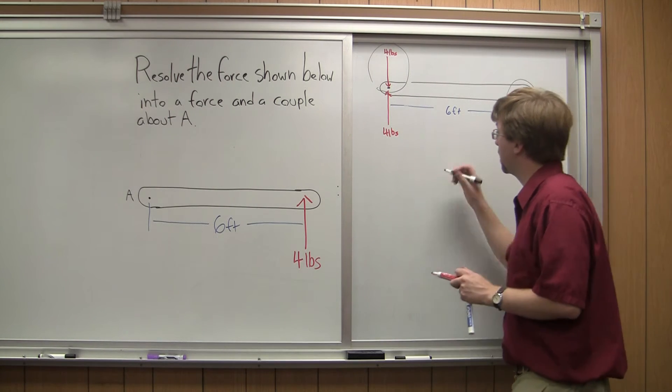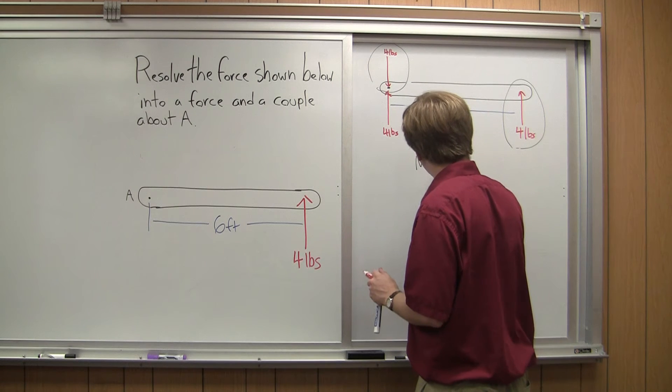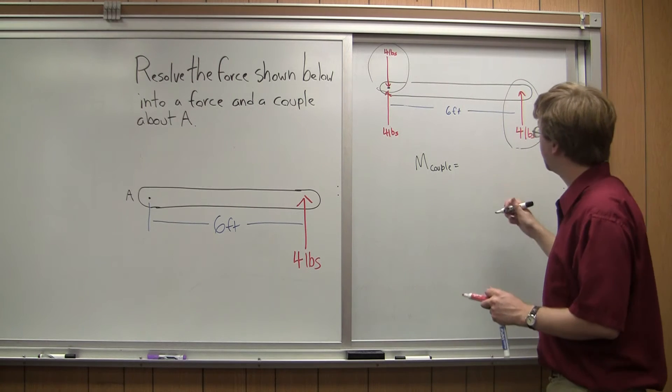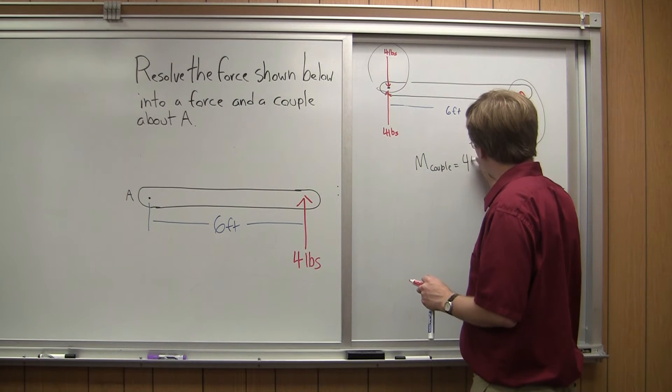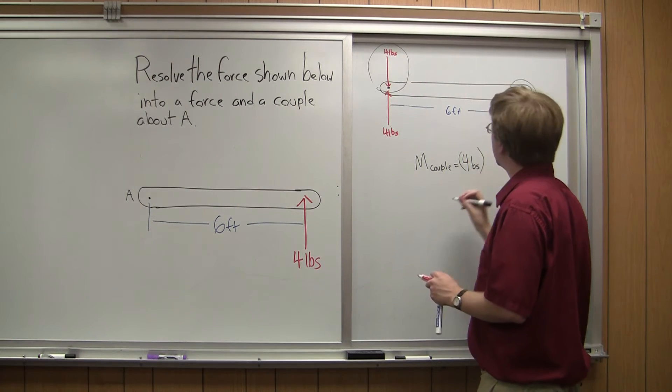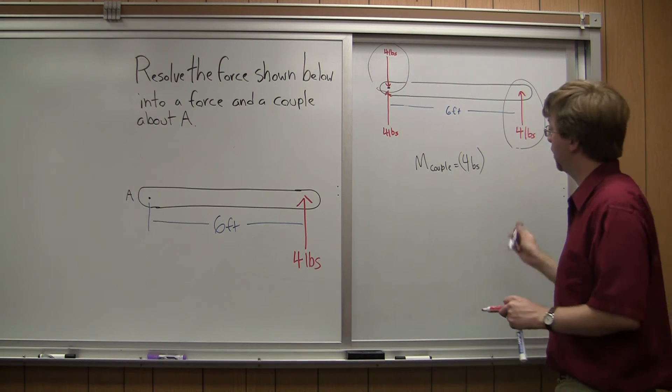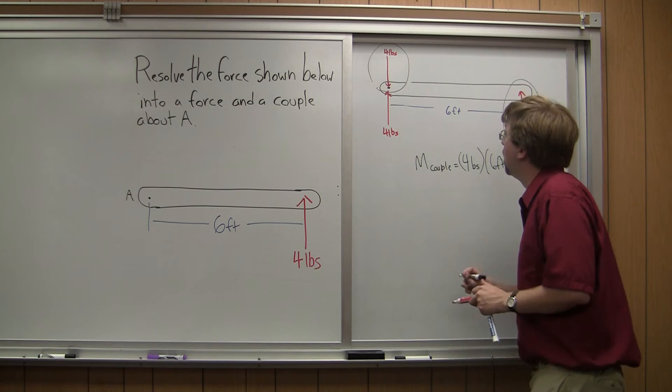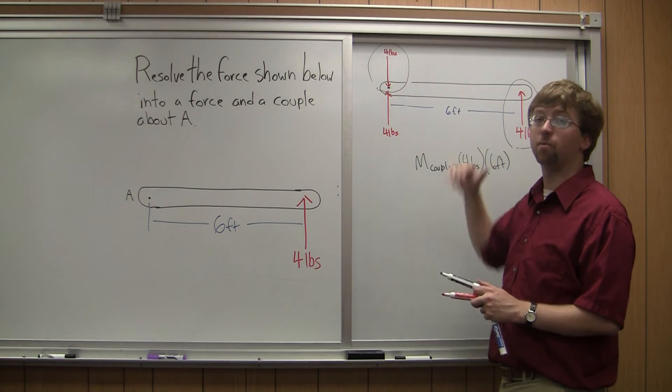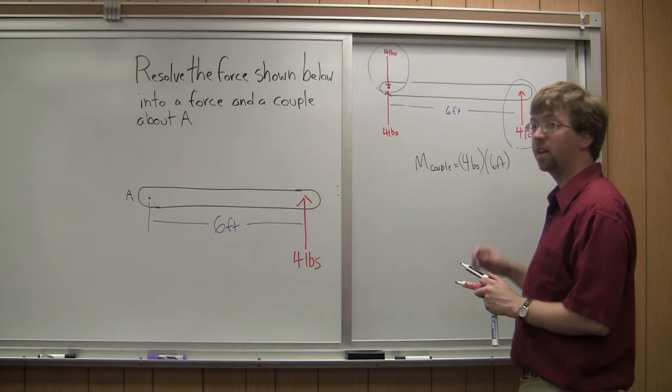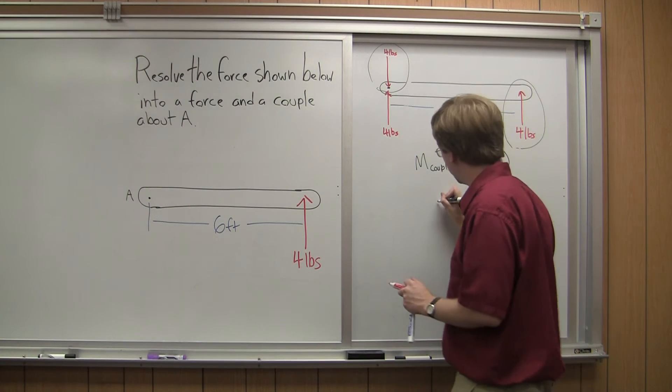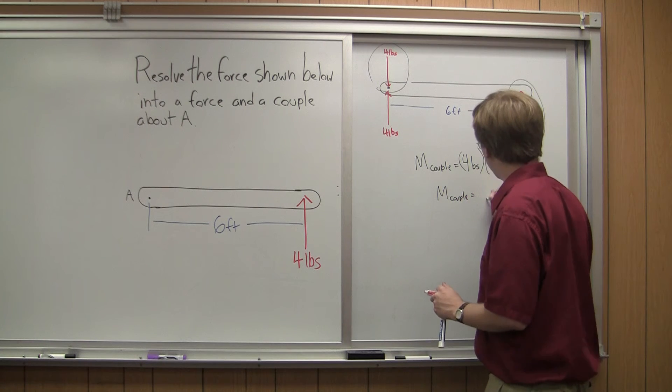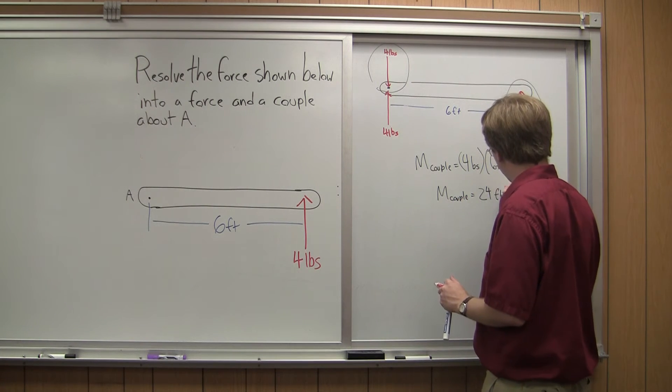And the moment exerted by that couple is going to be equal to the magnitude of the force, 4 pounds, times the perpendicular distance. In this case, it's going to be 6 feet. And this whole thing, it's going to be a positive moment. We use my right-hand rule to deduce the direction. So the moment of the couple is going to be 24 foot-pounds.